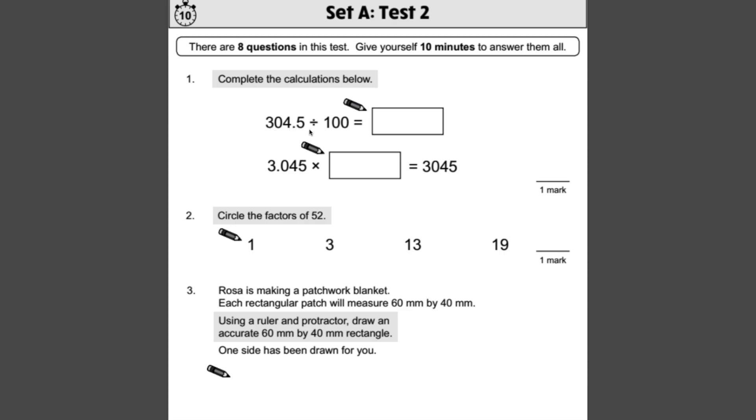Number one, 304.5 divided by 100. You should know by now that if you are going to divide by 100, the whole number is going to need to move two spaces, because that's how many zeros we've got, to the right. Because when we divide, a number gets smaller. So in this case, 304.5, two spaces to the right, the whole number is going to move.